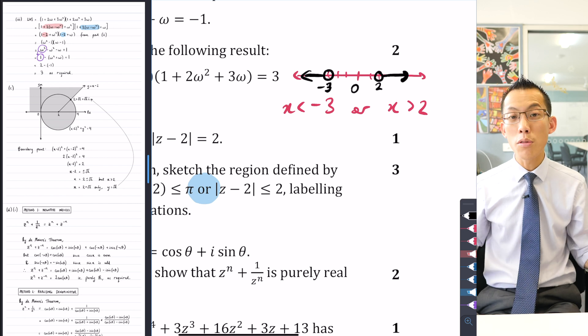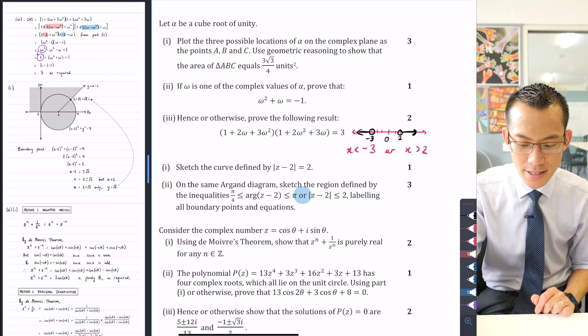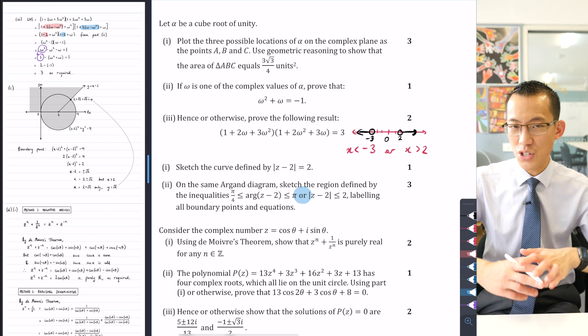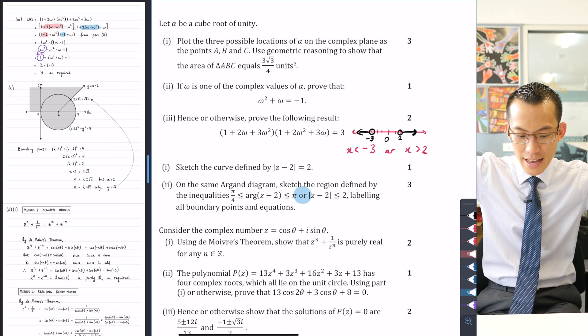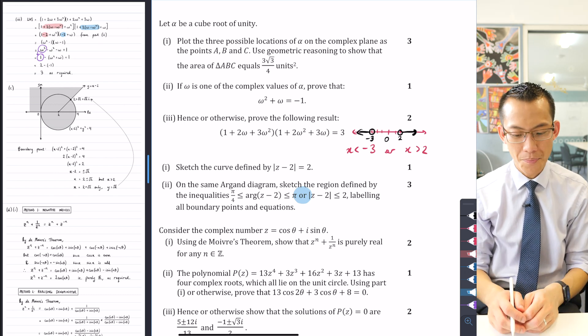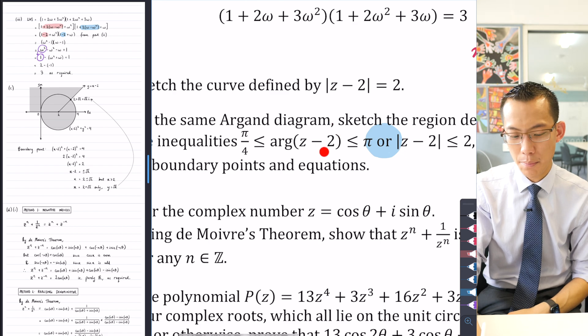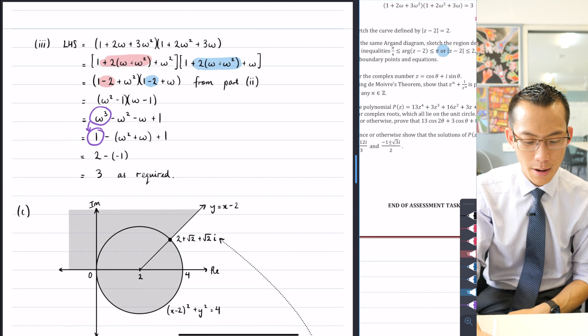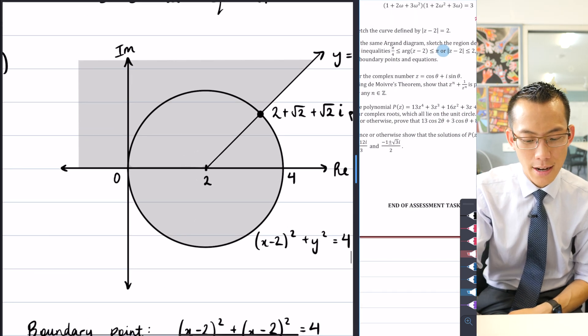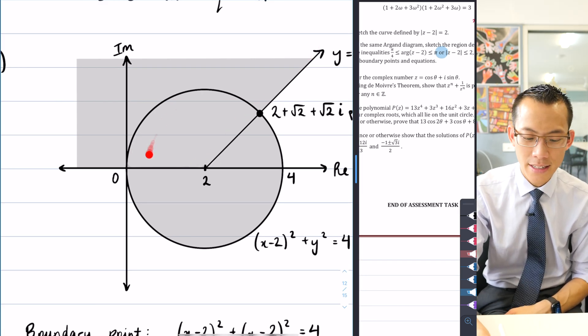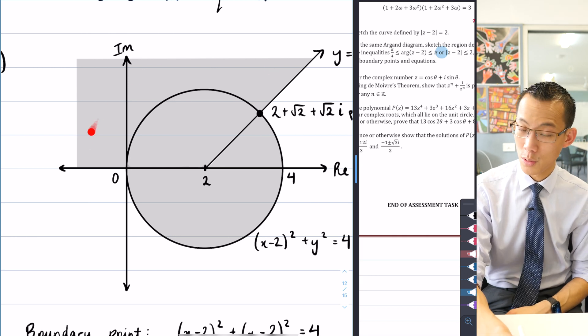So in other words you include both of them, right? Therefore you've got this inequality here which is inside the circle, and then you've got this inequality here which is the entire plane that has an argument between pi on four and pi as measured from this point here, the reference point being two. That's why several of you got the boundary correct but then you said well I'm just going to include this part here because you forgot that this part was also included.